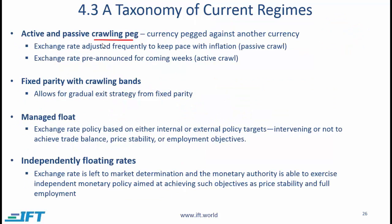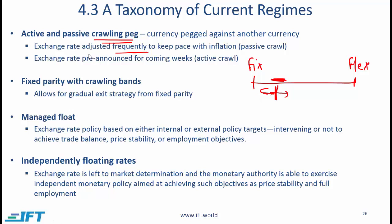Active and passive crawling peg: this is where the currency is pegged against another currency, still closer to the fixed side of the spectrum but moving towards more flexibility — the peg can crawl, meaning the exchange rate is allowed to slowly move in whatever direction is necessary. The exchange rate is adjusted frequently to keep pace with inflation; when this happens, we say we have a passive crawl. At times, the monetary authority will pre-announce what the pegs will be for upcoming days or weeks — that is called an active crawl, which helps set expectations about exchange rates.